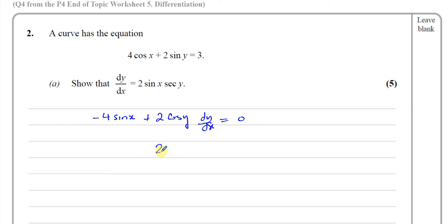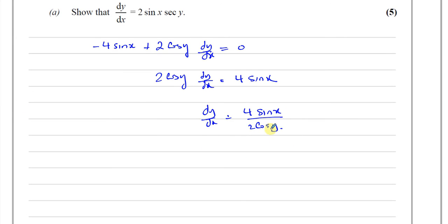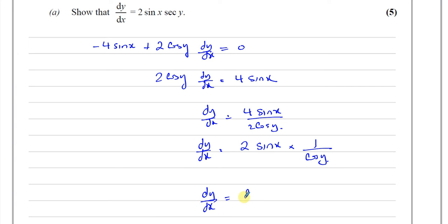So now we have 2cos(y) times dy/dx equals 4sin(x). Rearranging that, dy/dx equals 4sin(x) over 2cos(y). We can simplify this to dy/dx equals 2, and 1 over cos(y) is sec(y). So we can finally show that dy/dx equals 2sin(x) times sec(y). That completes part a.